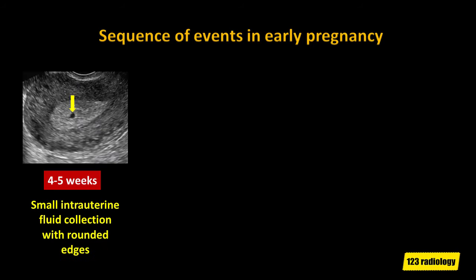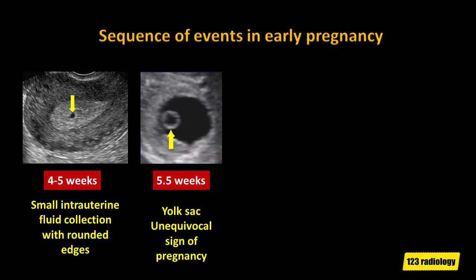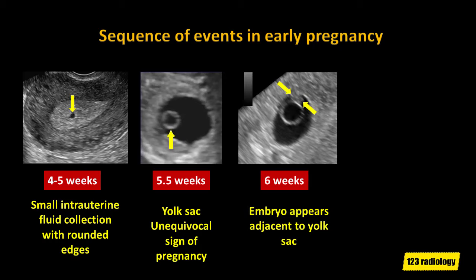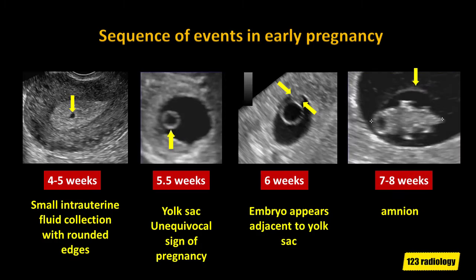Here is the sequence of events in early pregnancy. On the image on the left, we have a very small intrauterine fluid collection with rounded edges, and that is one of the earliest signs of intrauterine pregnancy. Next we have a sac that contains a yolk sac, and this occurs at 5½ weeks of pregnancy — this is an unequivocal sign of a pregnancy. Then an embryo appears at 6 weeks adjacent to the yolk sac, and usually we get a flicker of cardiac activity at this time. Later on at 7 weeks, we see an amnion surrounding the embryo.